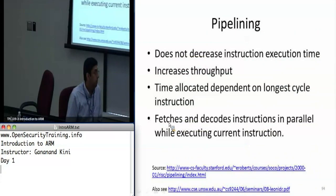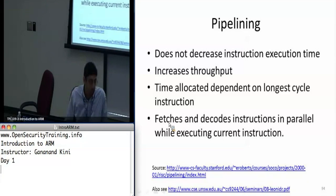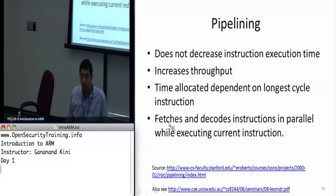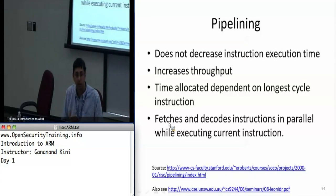Now let's talk about pipelining. The instruction cycle has three pieces: fetch, decode, and execute. The important thing to remember about pipelining is that it does not improve your instruction execution time — it just increases the throughput of your code, so more instructions can be executed in parallel rather than taking time to fetch and decode separately.